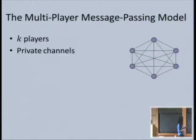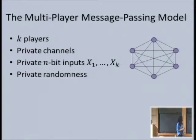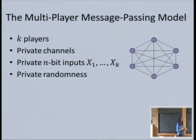The model is: we have K players who talk to each other over private channels via pairwise communication. They each have a private input nobody else knows, and also private randomness. This is the message-passing model. It's been used all over the place in distributed computing for fundamental things like the impossibility of consensus. It's also used for secure multiparty computation, because private channels are really helpful. We're hoping that by looking at classical problems in this model, we'll gain insight into classical distributed computing.